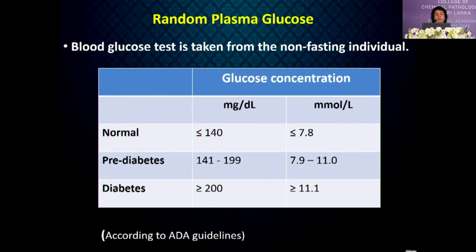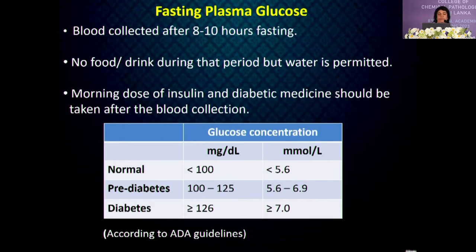For random plasma glucose, blood is collected from non-fasting individuals. According to the American Diabetes Association guidelines, in a patient with hyperglycemic symptoms, a random plasma glucose greater than 200 mg/dL indicates diabetes. For fasting plasma glucose, 8 to 10 hours of fasting is needed. During fasting, no food or drink is permitted but water is allowed, and the morning dose of insulin and diabetic medication should be taken after blood collection.